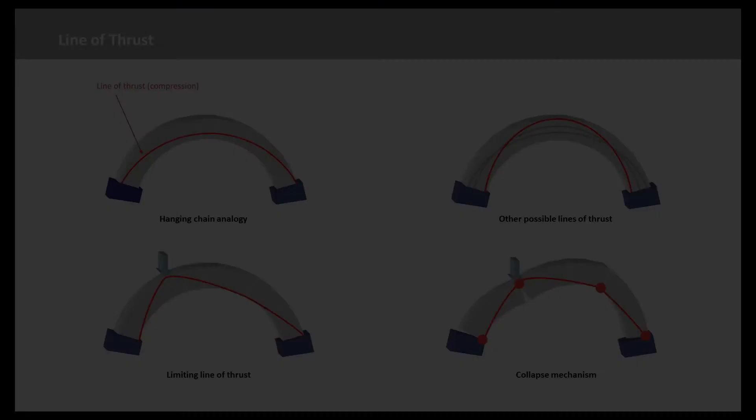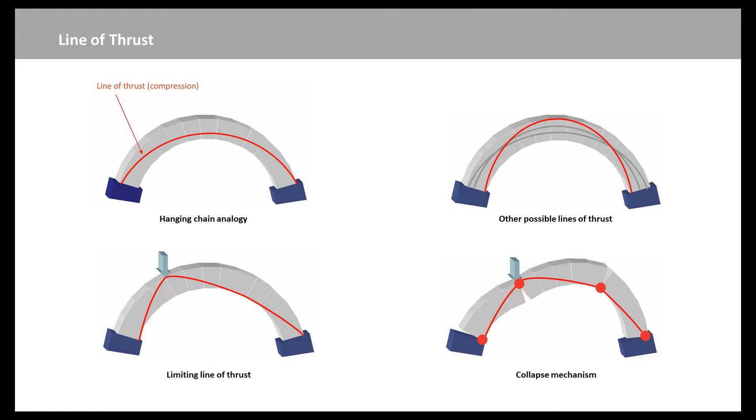Of course, the observation is that there are a number of these profiles, which we can now call a line of thrust or a line of compression, that fits entirely within the thickness of the masonry, because we are dealing with a statically indeterminate form. So you can see we've got three different profiles which fit within the thickness of the masonry.